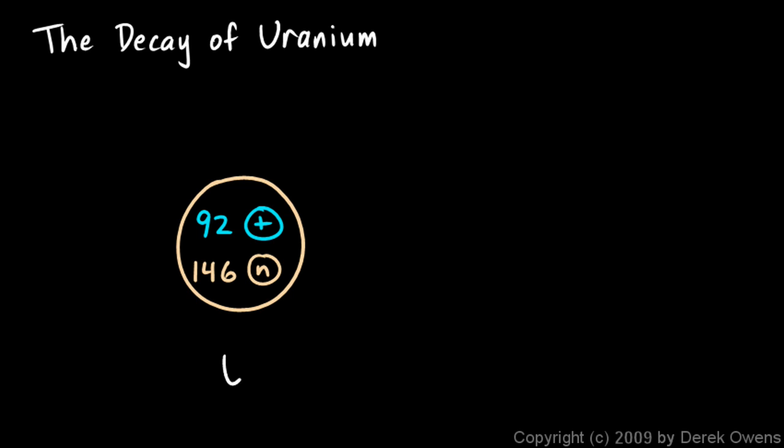We typically write it like this: U, and we write 238 up here and 92 down here. This is referred to as uranium-238. It has an atomic number of 92. Remember, the atomic number is the number that determines what element it is, and this is uranium, 92 protons.